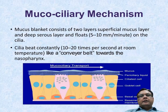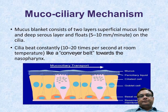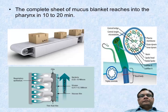The mucociliary mechanism: the mucus blanket consists of two layers — superficial mucosal layer and deep serous layer — and floats on the cilia. The speed is 5 to 10 mm per minute. Cilia beat constantly, 10 to 20 times per second at full tempo, like a conveyor belt towards the nasopharynx. The mucus blanket consists of superficial mucosal and deep serous layers; goblet cells secrete the mucus. The complete sheet of mucus blanket reaches the nasopharynx in 10 to 20 minutes — this is the conveyor belt mechanism.